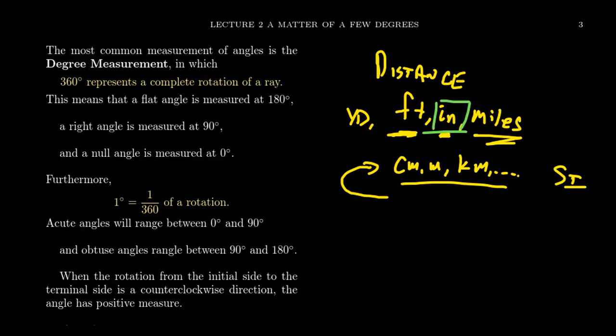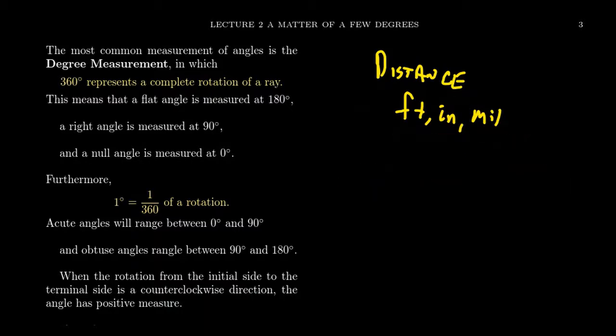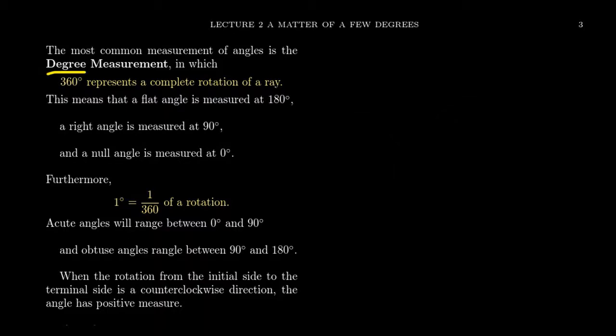The reason I talk about this is that angle measurement is the same basic idea. In this trigonometry series, there are two particular forms of angle measure that we're going to focus on. In this video, we're going to talk about the idea of degree measure. Sometime later in this lecture series, we'll introduce a competing notion called radian measure.